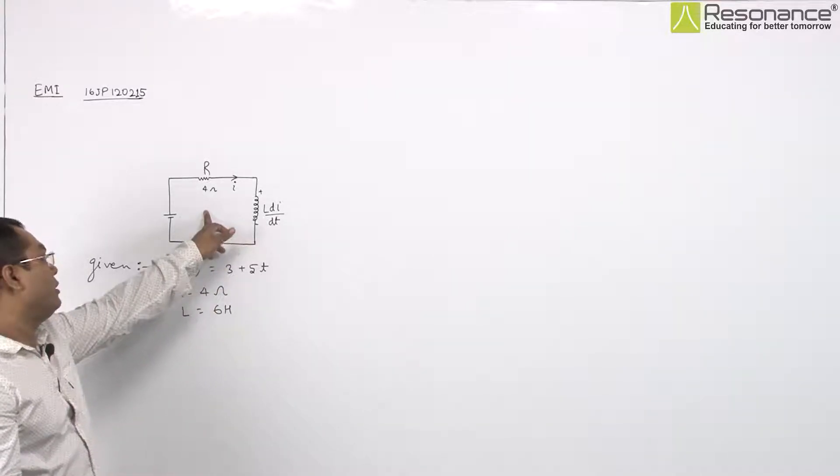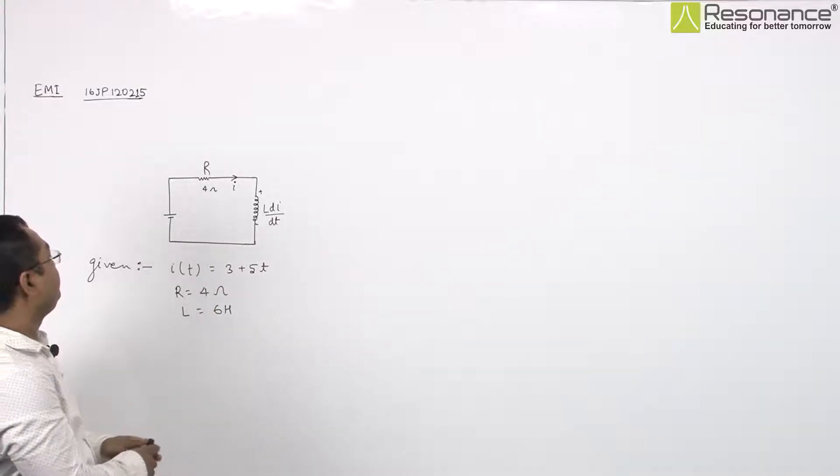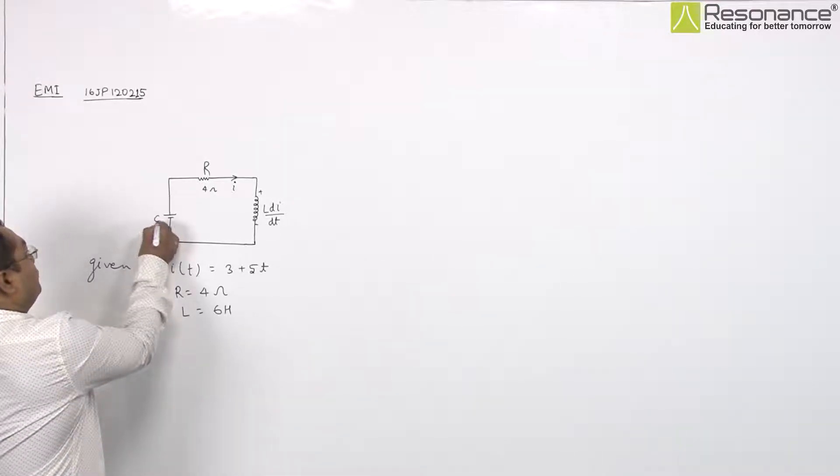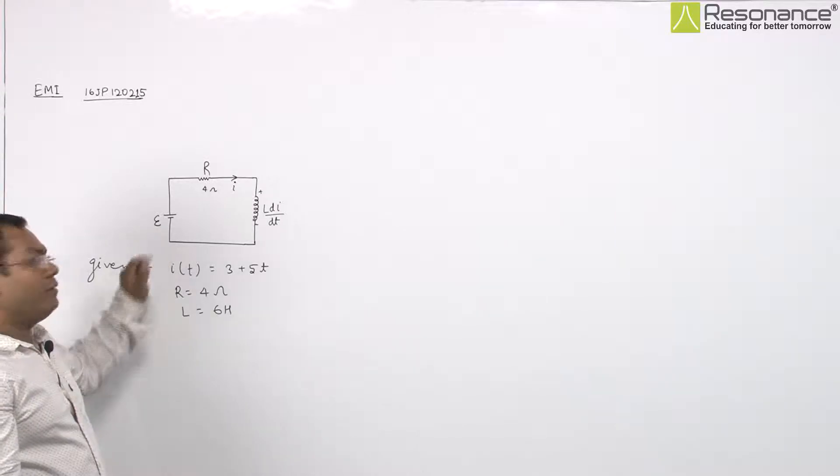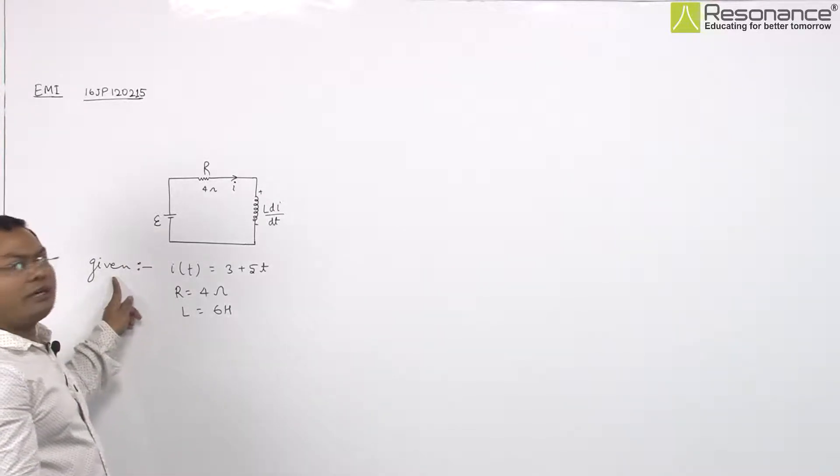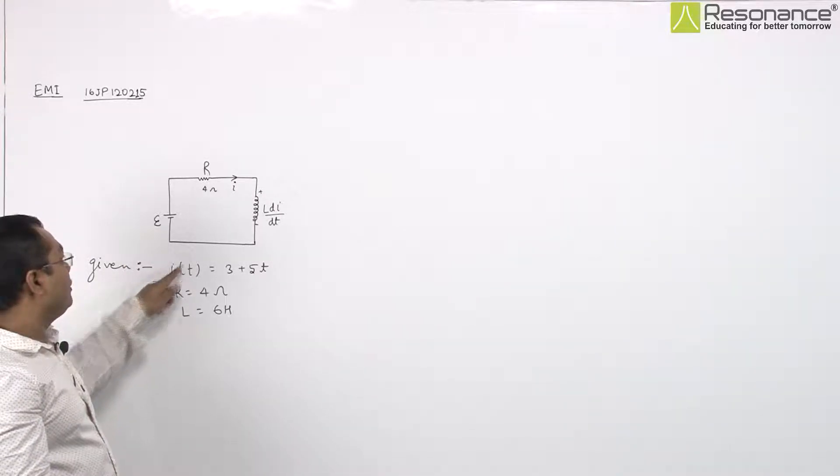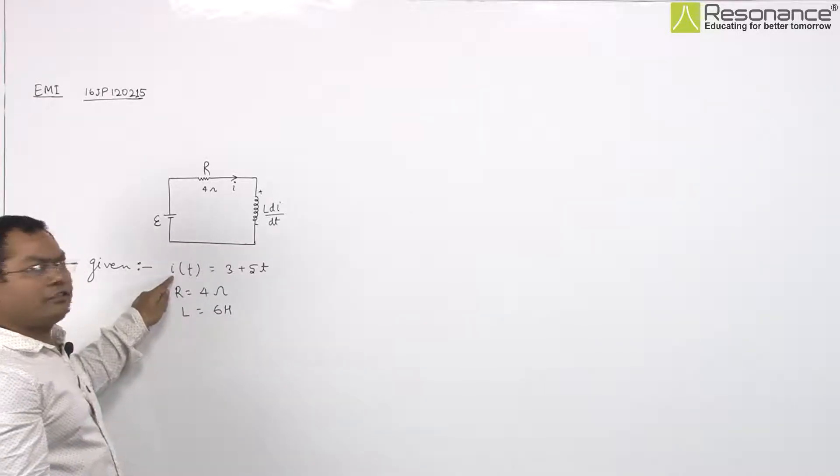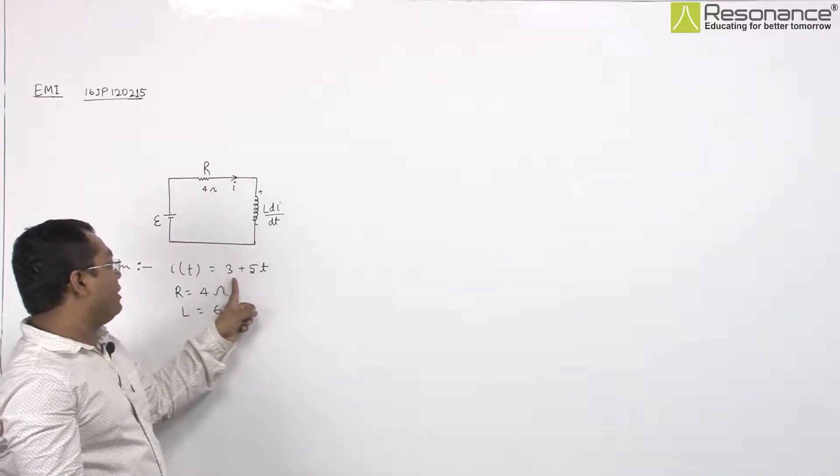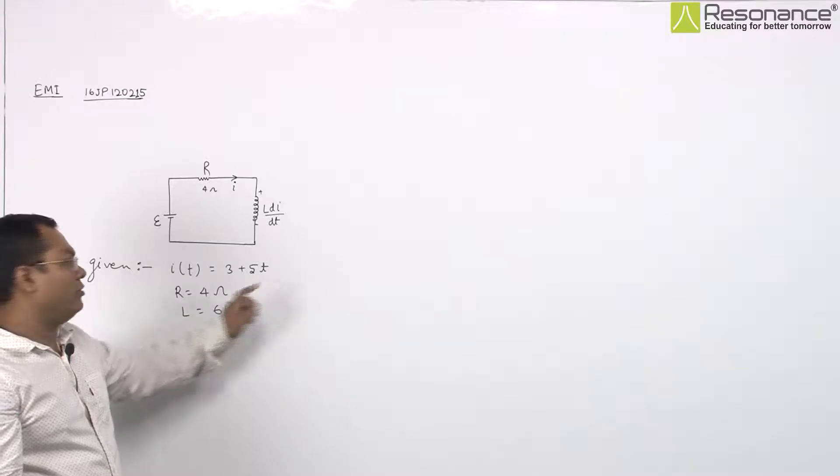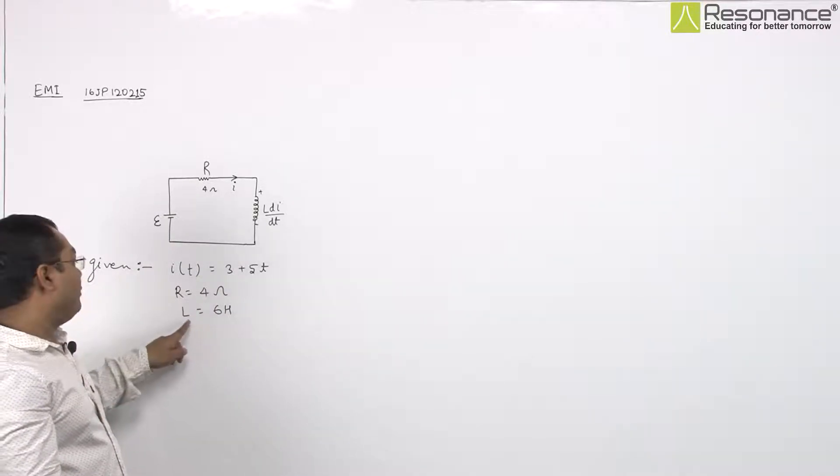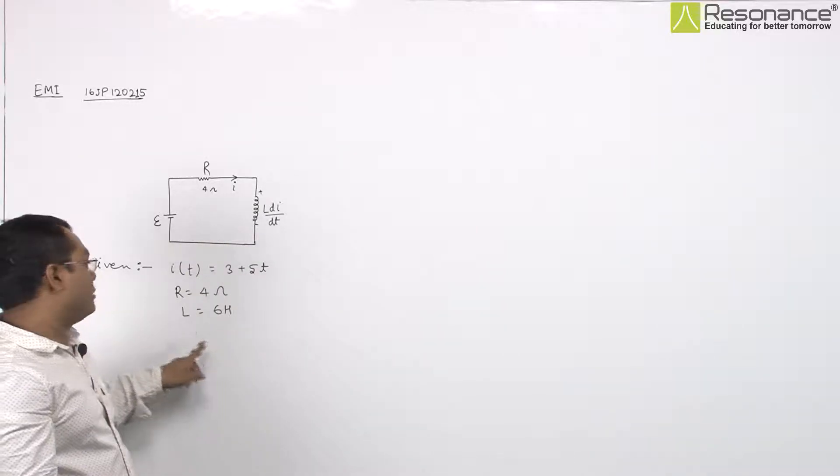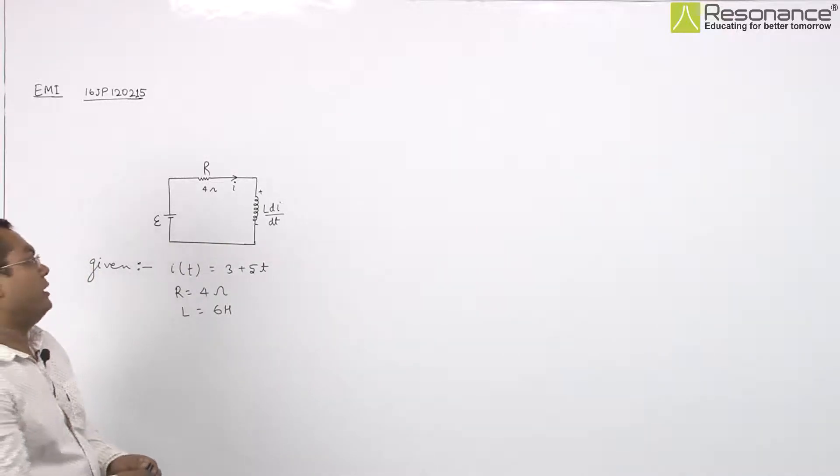In this circuit, it is asking to find function of EMF in T and these are given data. In this circuit, current is changing at the rate 3 plus 5T. Value of R is given 4 ohm and value of this inductor is given as 6 henry.